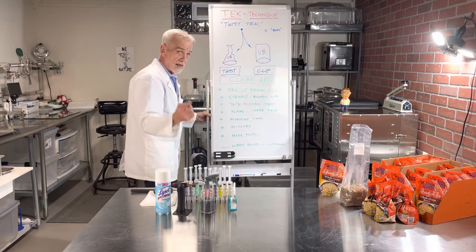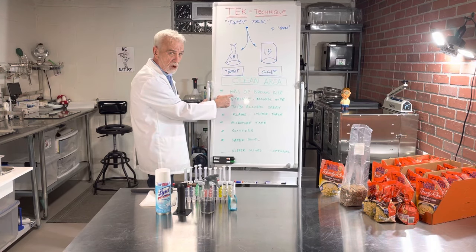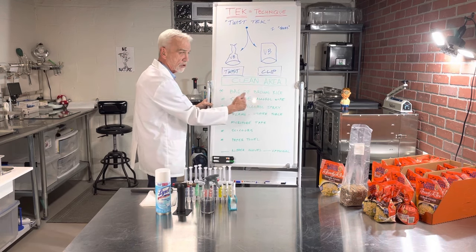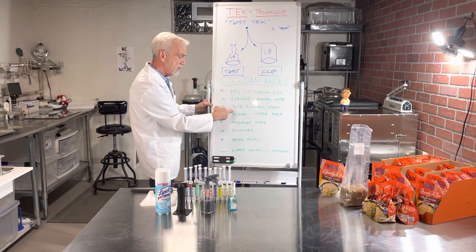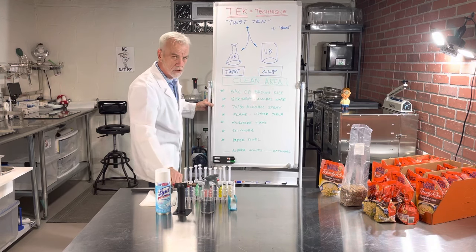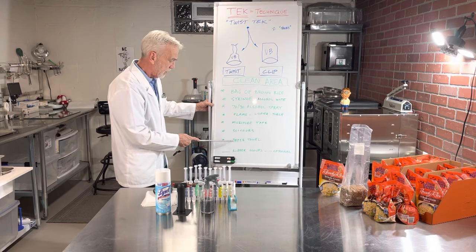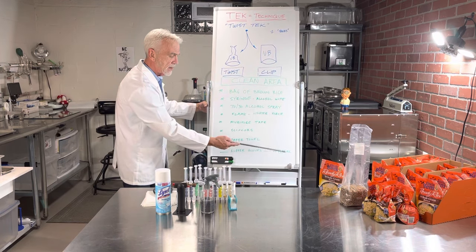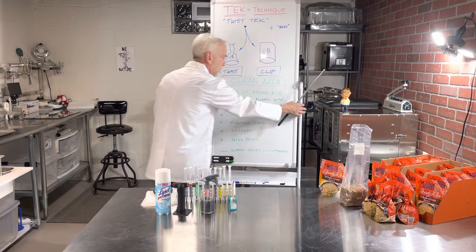I'm going to not use them just for the sake of this demonstration to show that you can do this without rubber gloves, but if you have them, I definitely recommend that you use them for this operation. So again, I'll run through that one more time. However many bags of rice you plan on inoculating, we want those syringes that you're going to be using and an alcohol wipe per syringe, 70-30 alcohol spray, micropore tape, scissors, paper towel, rubber gloves, and I call those optional, but if you have them, use them.